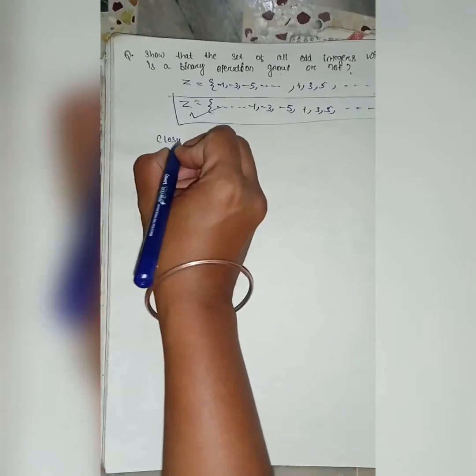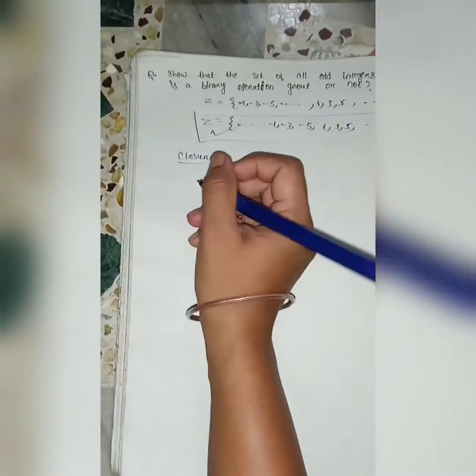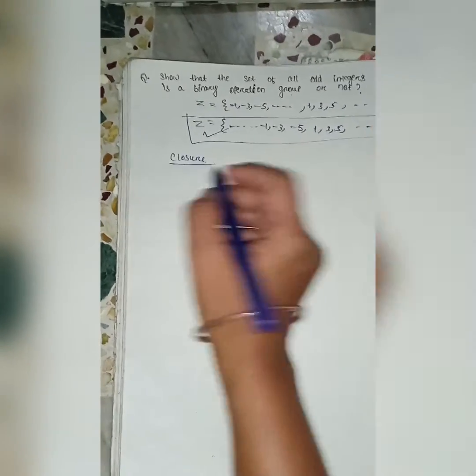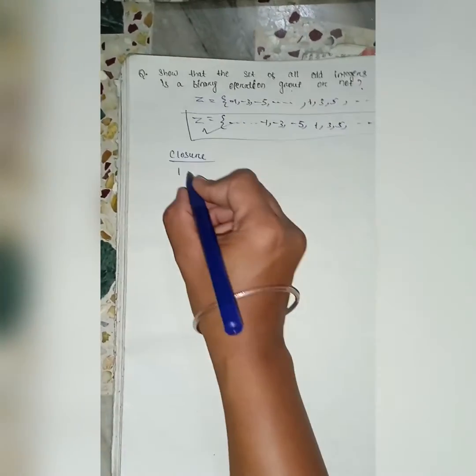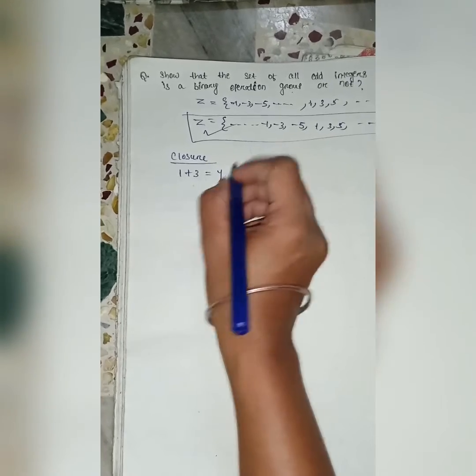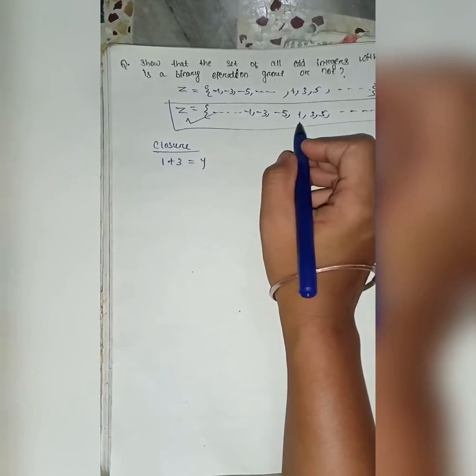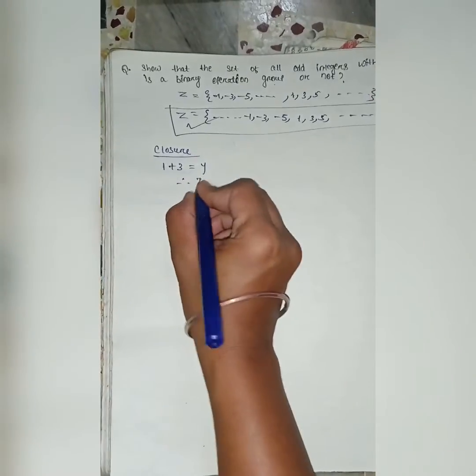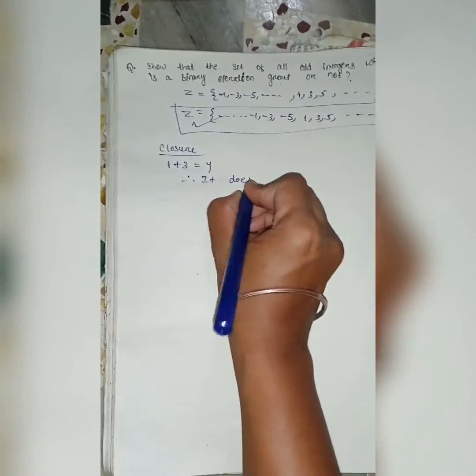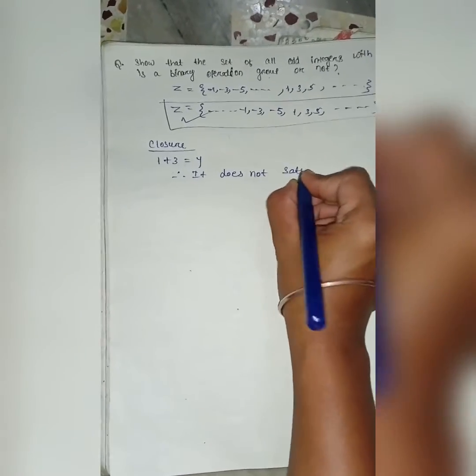So, first check closure property. Closure. If I add 1 plus 3, it is equal to 4. Is 4 present in z? No. As 4 is not present in z. Therefore, it does not satisfy closure property.